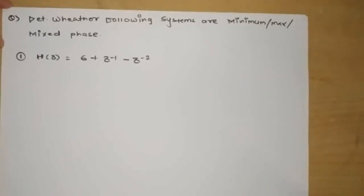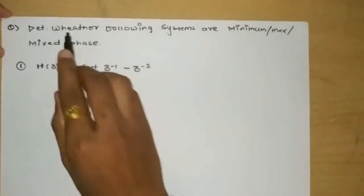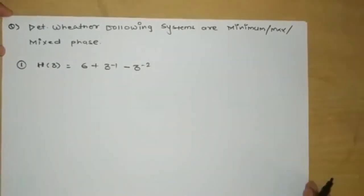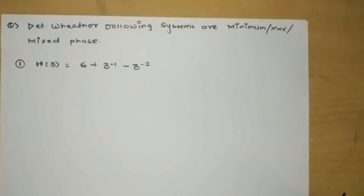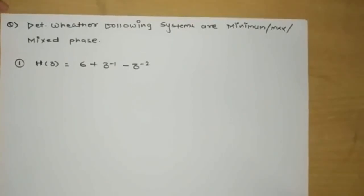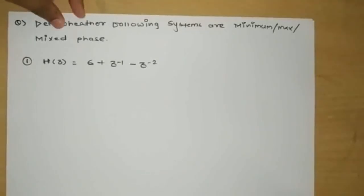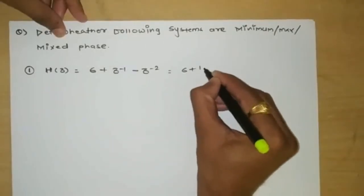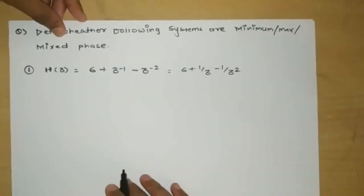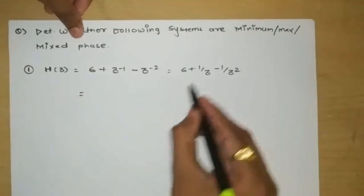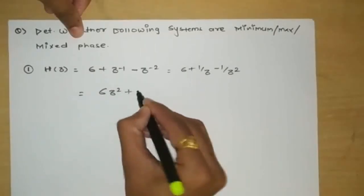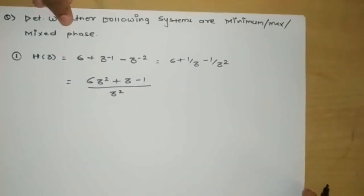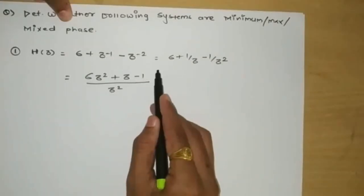Now the question is: determine whether the following system is minimum, maximum, or mixed phase. The transfer function given is H(z) = 6 + z⁻¹ - 2z⁻². Since these systems are classified based on the locations of zeros, we find the zeros of the given transfer function. Simplifying: 6 + 1/z - 1/z², taking LCM as z², gives (6z² + z - 1) / z².